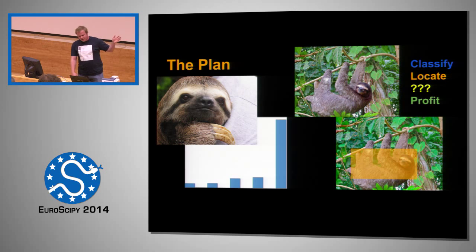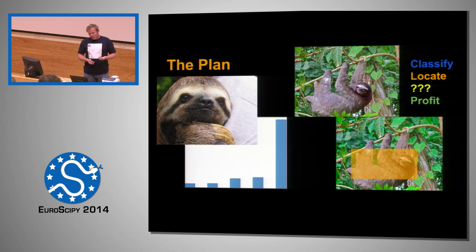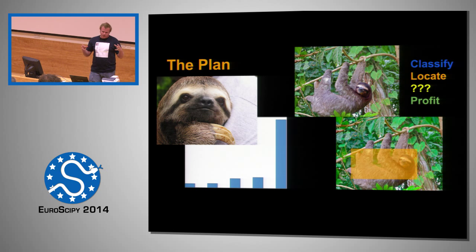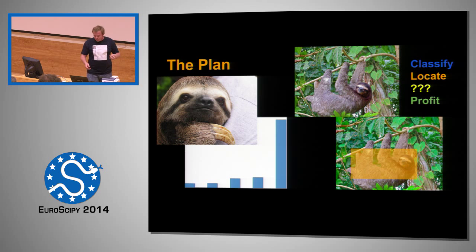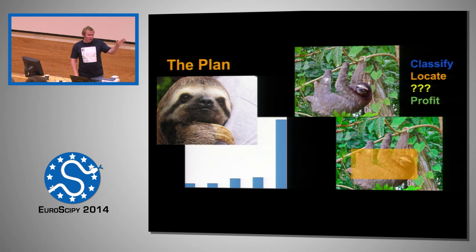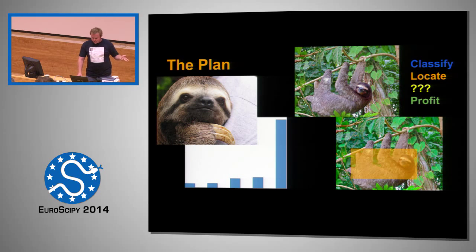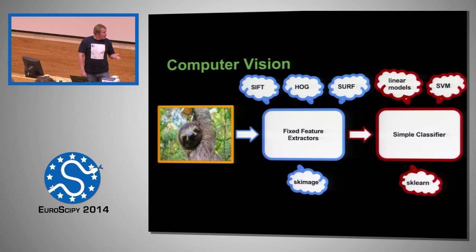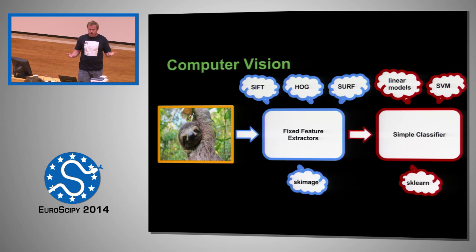Here's the game plan. We have some image — in this case a sloth — and we want to classify that image. Ideally, we'd like to locate the subject inside of a larger image, do something — hug it, feed it — whatever we want. At the end, we'll hopefully make some money. These graphics don't have labels, but by the end of the talk we'll put labels on them and explain the processing. This is at least my representation of a classic computer vision pipeline.